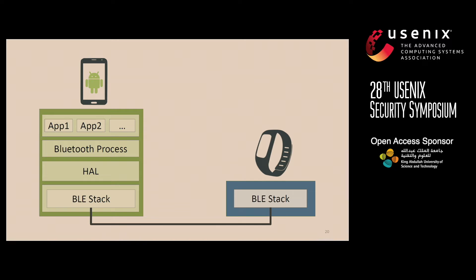This happens because pairing essentially takes place between devices rather than between the application layers — in fact, it happens between the lower layers of the BLE stack. That means the paired link is going to be common to all the applications on the requesting device.